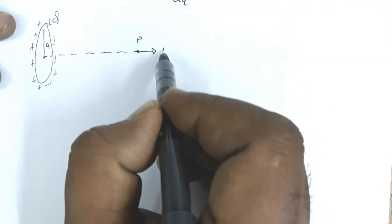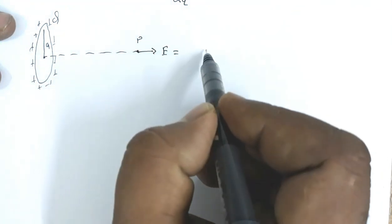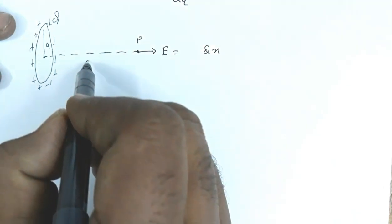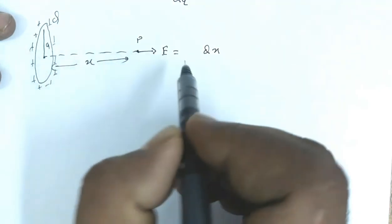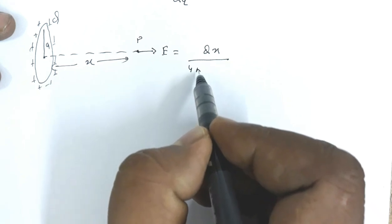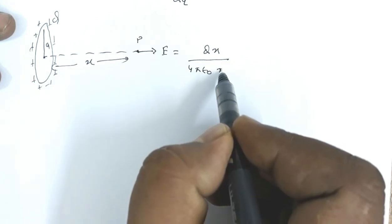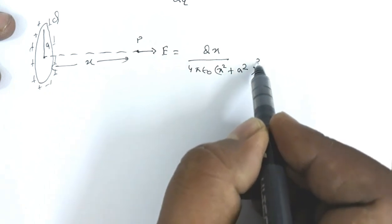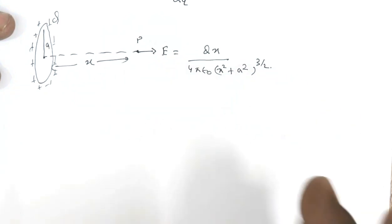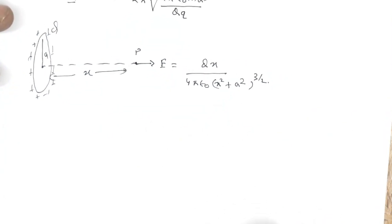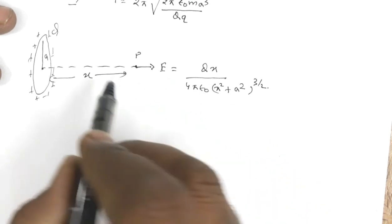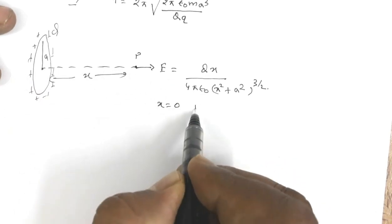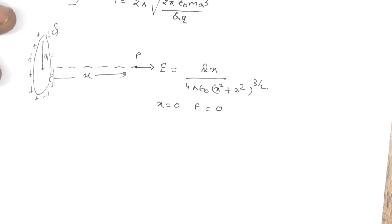The resultant electric field is E = Qx / (4πε₀(x² + a²)^(3/2)). This is the value of electric field. As you can see, at the center of the ring x = 0, so E is also equal to 0.